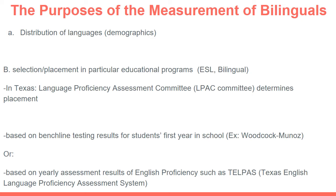Often, bilinguals when they first enter school are provided a pre-assessment test. One of the most popular ones is called the Woodcock-Munoz test. That pre-assessment test evaluates students' abilities in English and also in their native language. Based on the results of that test, students are placed in either bilingual, ESL, or completely monolingual non-ESL programs. The committee in Texas that determines that is called the ELPAC committee — the language proficiency assessment committee.